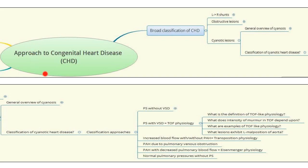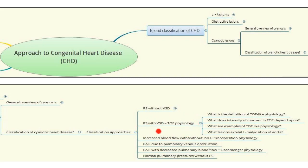We are going to start with a topic in congenital heart disease in which there are broadly three types: left-to-right shunt, obstructive lesions, and cyanotic lesions. The cyanotic lesions are further divided into various types — broadly six types — of which today's focus is going to be on TOF-like physiology, those lesions which are cyanotic with pulmonary stenosis and VSD.